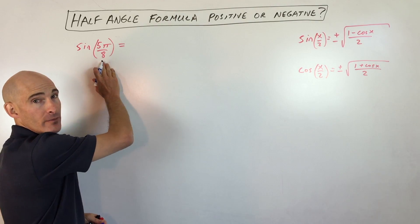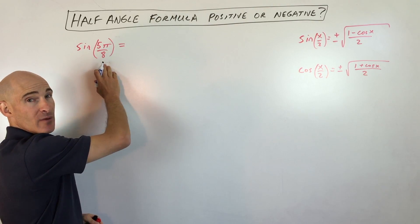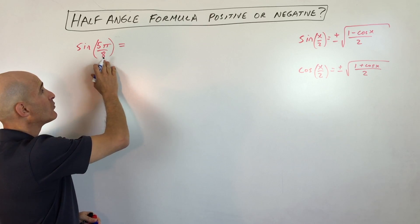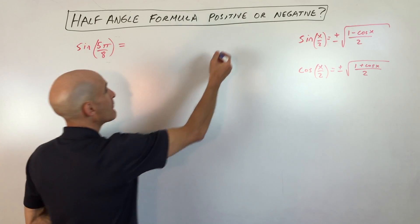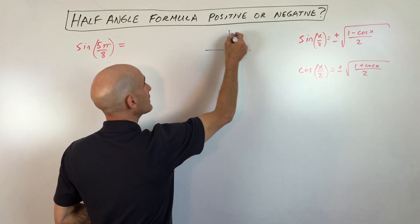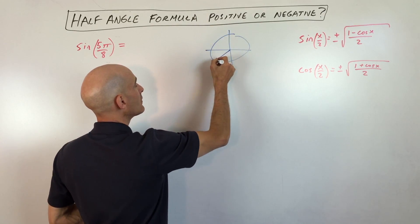But π/8 is not one that we know. It's not one that we memorized on the unit circle, but we recognize that 5π/8 is actually half of 5π/4. 5π/4 is one that we know on our unit circle. It's right there.